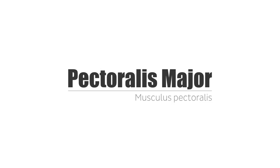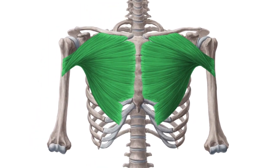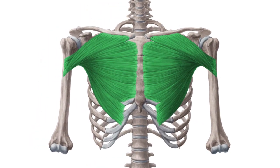Hey everyone, it's Matt from Kenhub, and in this tutorial, we will discuss the pectoralis major muscle. The pectoralis major muscle is a strong, fan-shaped muscle of the shoulder joint. It decisively shapes the surface anatomy of the chest, and it also participates in forming the anterior wall of the axilla.